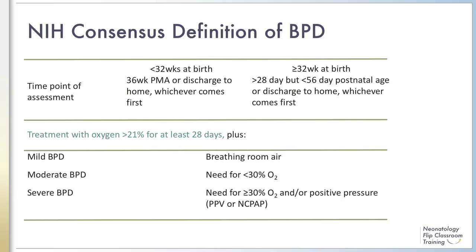However, the proposed criteria were ambiguous in that the original specification regarding receiving oxygen for 28 days has since been misinterpreted as receiving oxygen at 28 days in many reports, and this subtle change can influence the rate of BPD dramatically. In addition, infants on high-flow nasal cannula cannot be classified based on this definition. Except for the added benefit of BPD severity classification, this definition is similar to the one proposed by Banker-Lari in the late 1970s.